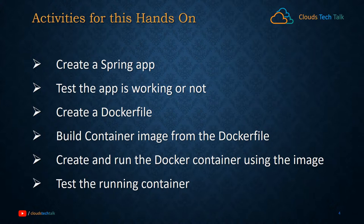Then we will test the application to see whether it is working fine on our local system — we'll run it and check the response. After that, we will create a Dockerfile and write it. The main objective is to create the corresponding Docker image, and then build the container image from the Dockerfile, and finally create and run a Docker container using that image.